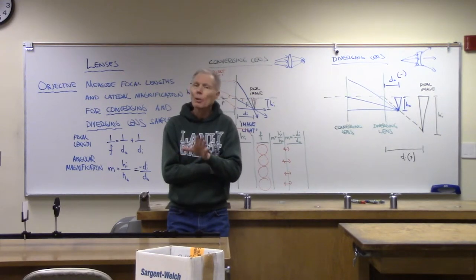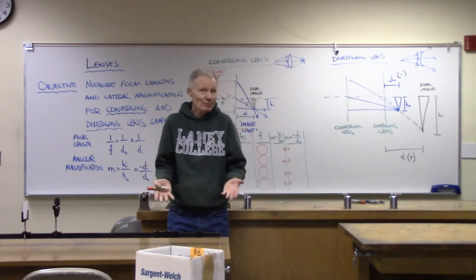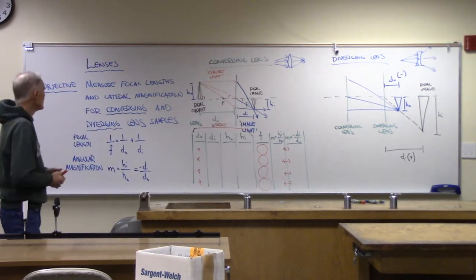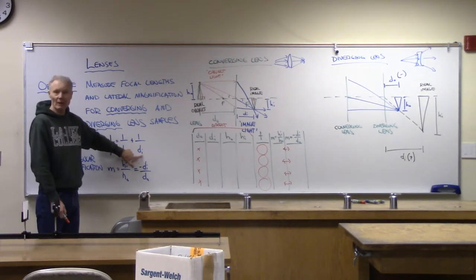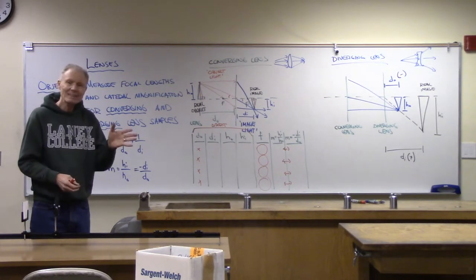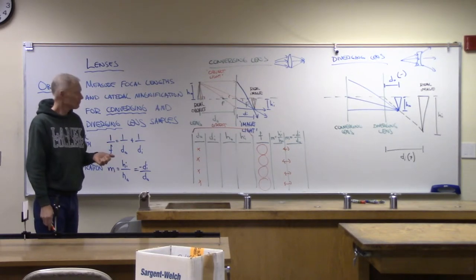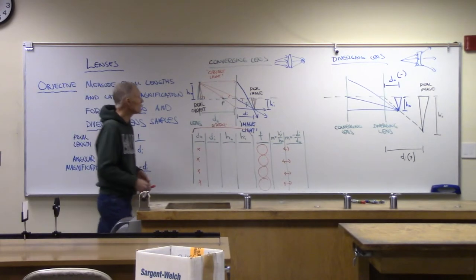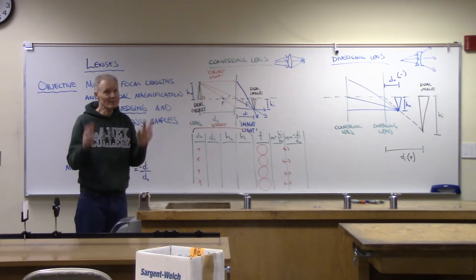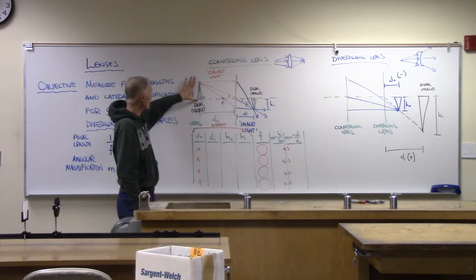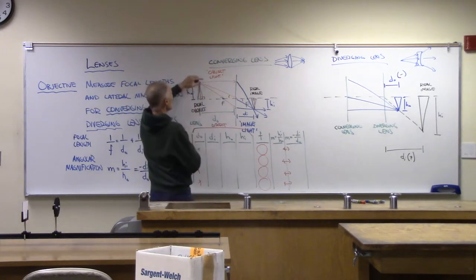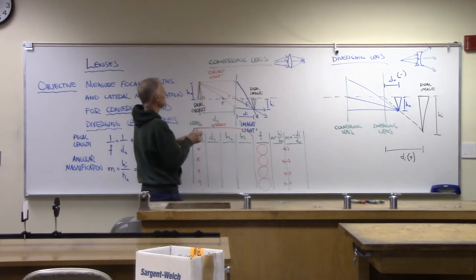One thing that always comes up with lenses is keeping track of signs. The formulas are deceptively simple — the math isn't difficult — but d_o, d_i, and f can each be positive or negative. A positive object distance means the object is real. A positive image distance means the image is real. The easiest setup is a converging lens going from real object to real image.